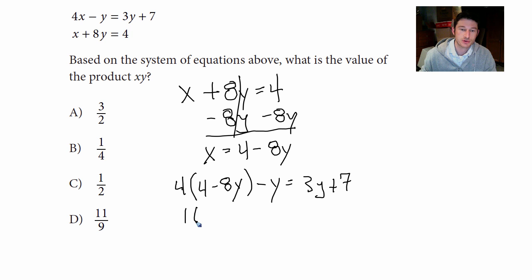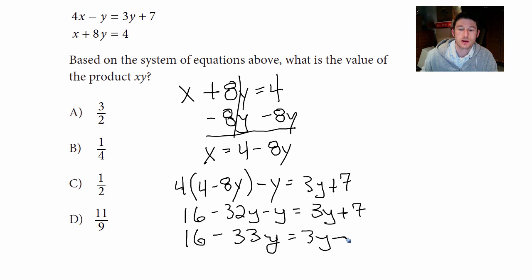Okay. So now let's distribute. That's going to be 16 minus 32Y minus Y equals 3Y plus 7. So I'm going to write this out. 16 minus negative 32 minus 1Y is negative 33Y equals 3Y plus 7.